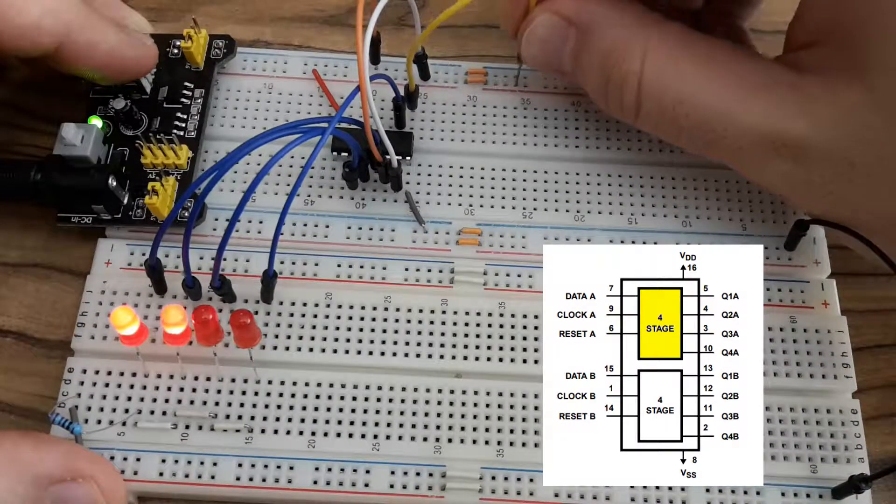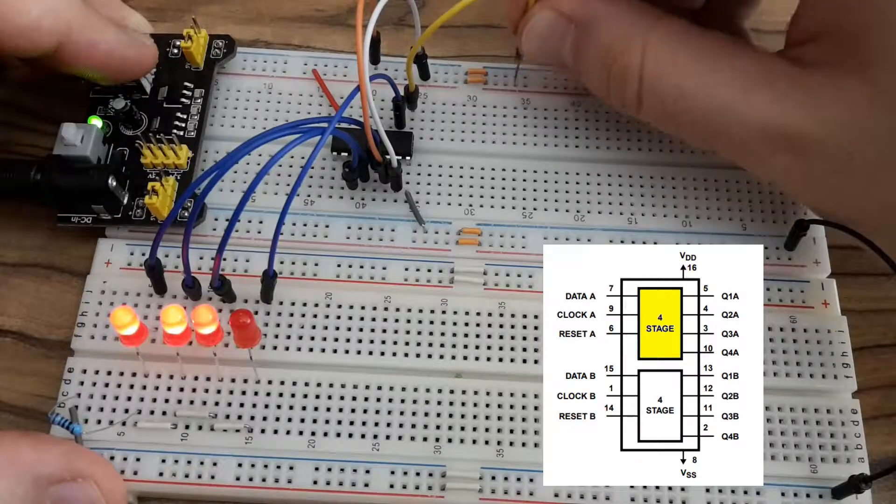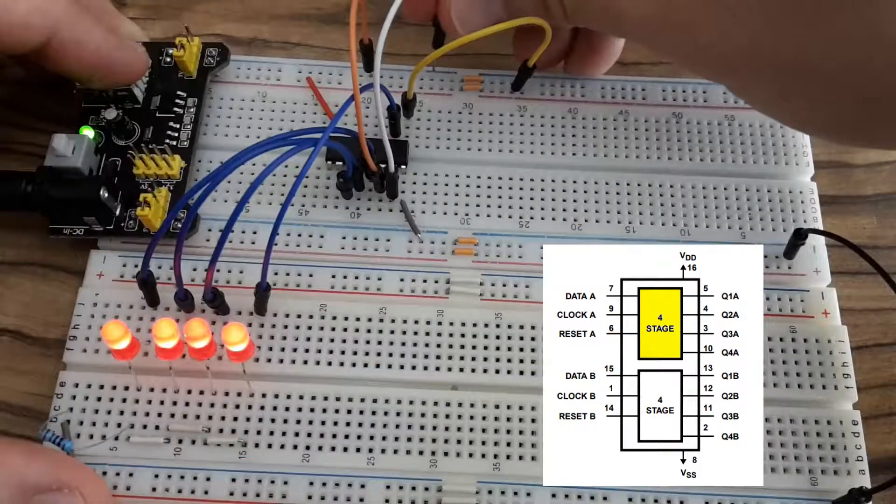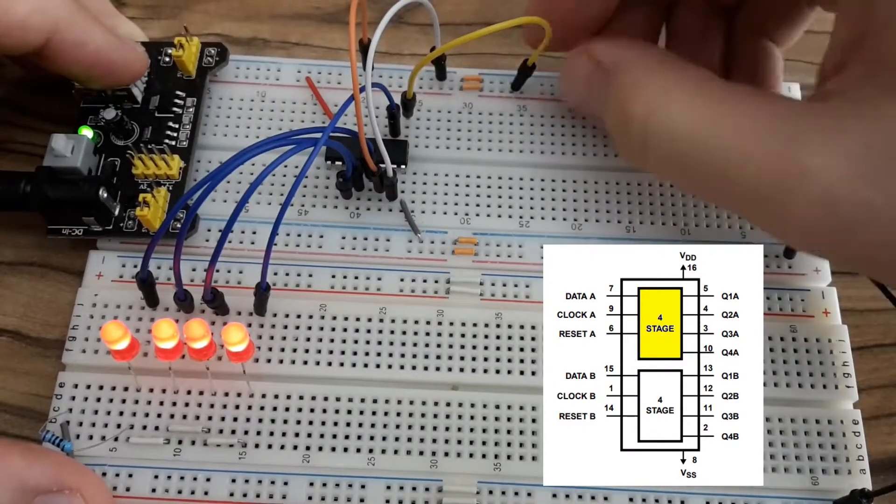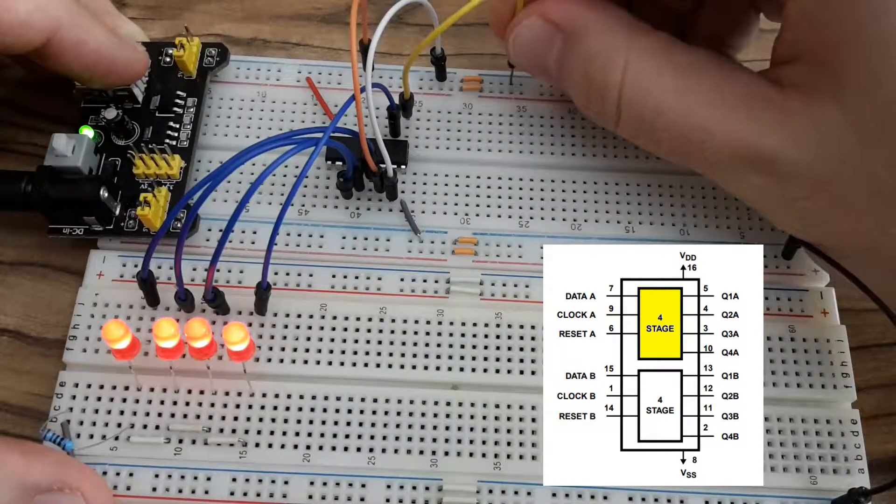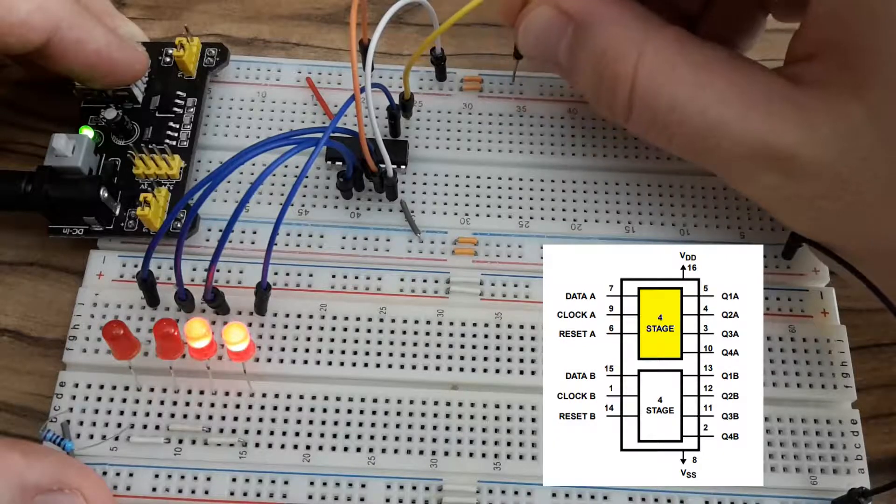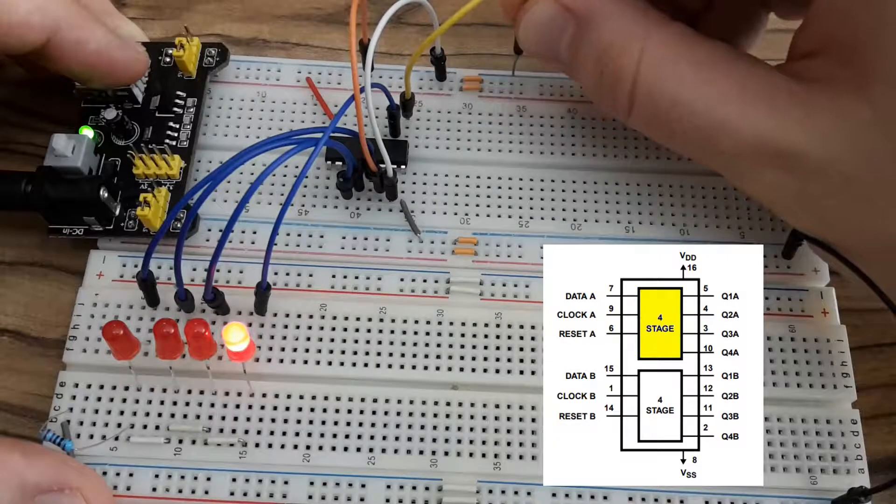I'm manually generating the clock signal and you can see LEDs turning on. If I connect the data pin to the ground and again generate the clock signal the shift register is cleared.